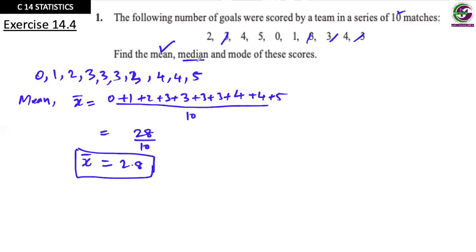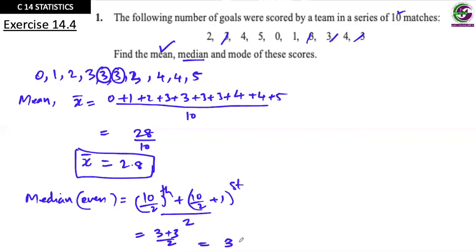Next, we have to find the median. We have even number of observations, total is 10. 10 by 2 is the fifth value plus 10 by 2 plus 1 sixth value divided by 2. Fifth value is 3, sixth value is 3. So 3 plus 3 divided by 2, which is 3 is the median. And to find the mode, 3 is most repeated. So we have only one mode. We get all the three now.